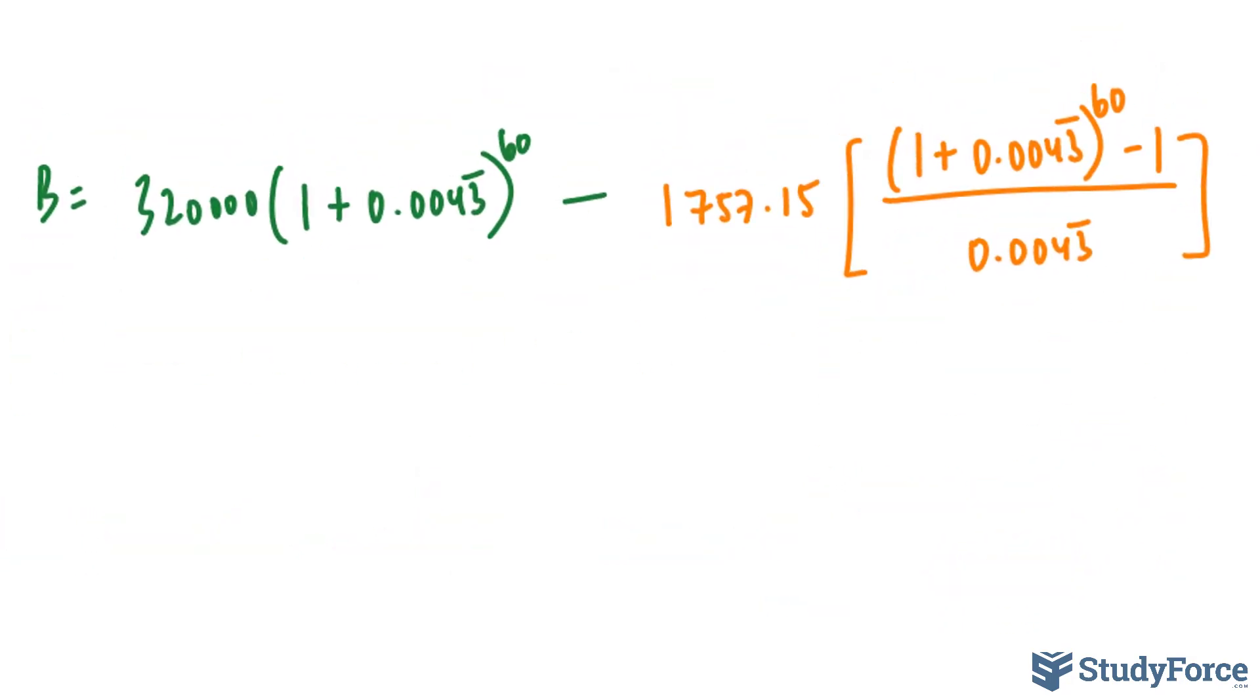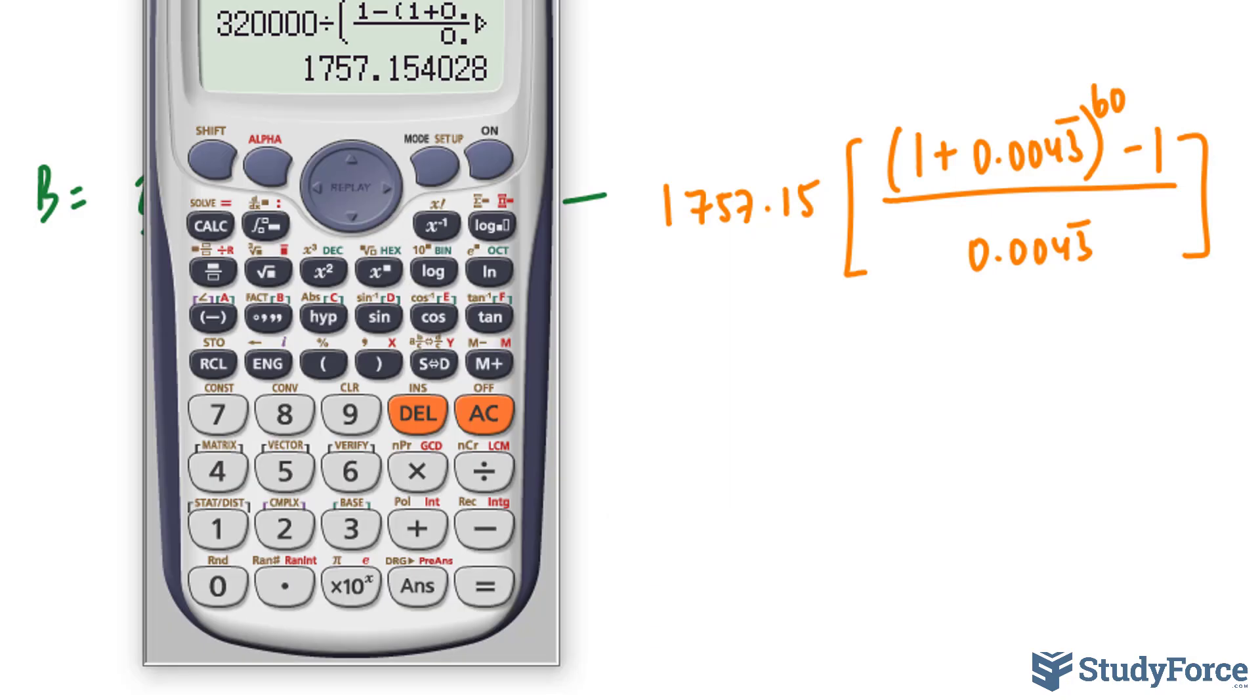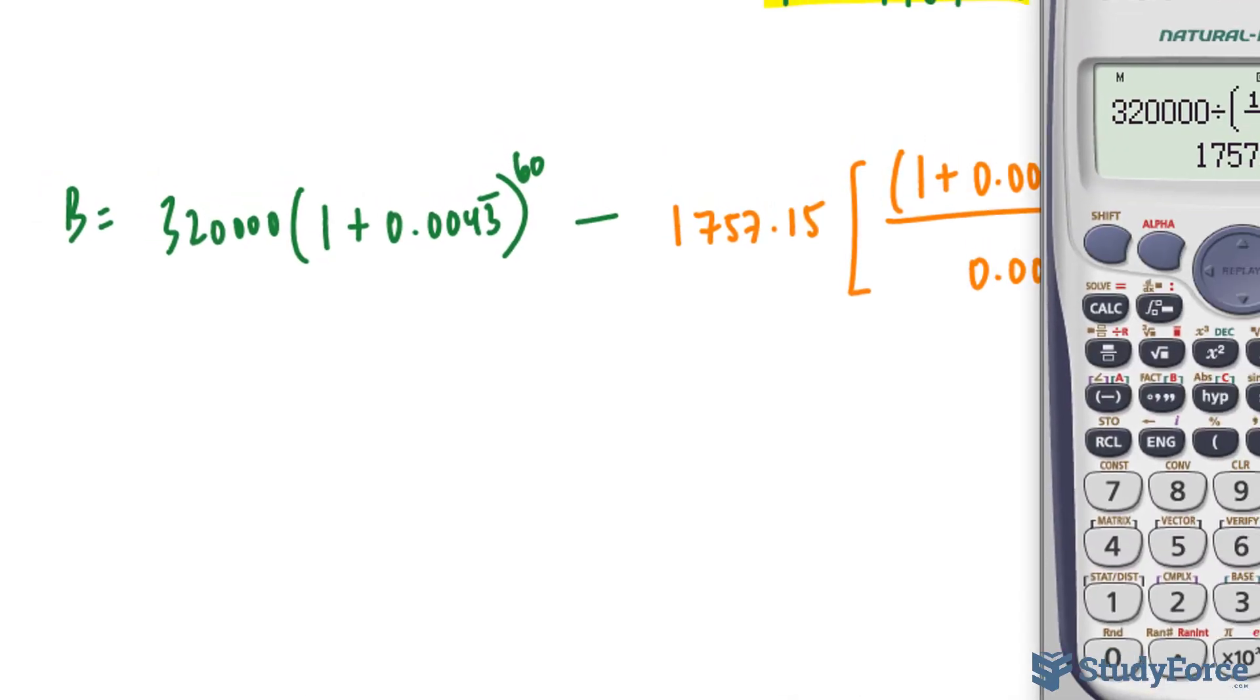So we're finding the future value of this loan after 60 periods, and subtracting from that the amount of interest that you would accumulate if you put 1,757.15 into an account every month and accumulating interest on that.